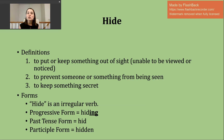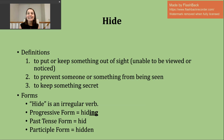Now, definitions one and two are both connected to seeing an object or a person. Definition three's meaning is not related to something that can be seen or viewed. The third way you can use the verb hide is to refer to keeping something a secret.